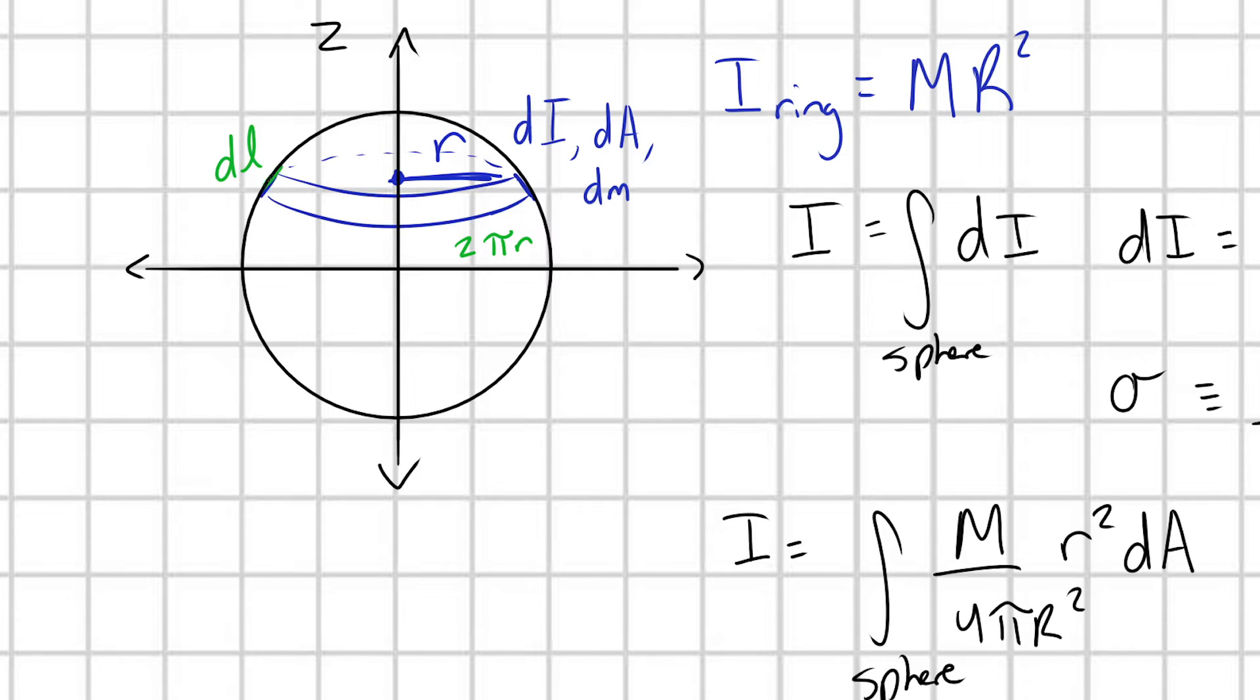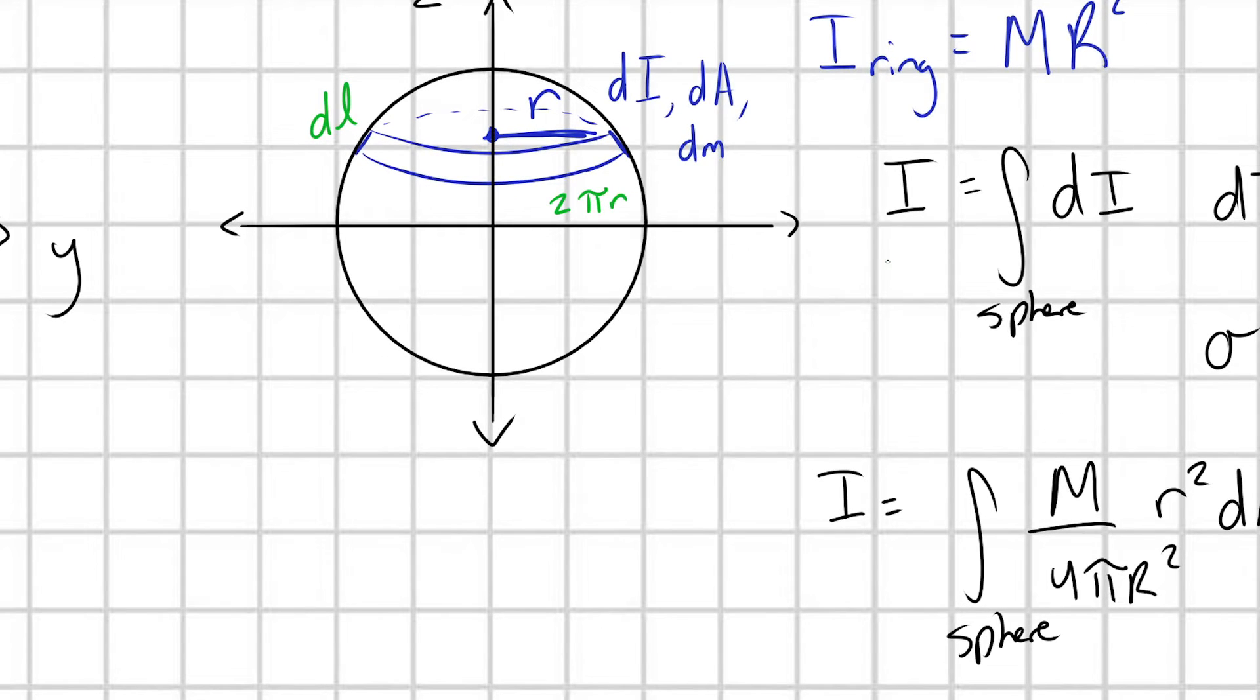Like this is the slant height of this portion of the sphere here. So if we do this, what's dA going to be equal to? Well, it's simply going to be 2 pi r times dL. We just take our two dimensions and multiply them together to get our little area element. Perfect.